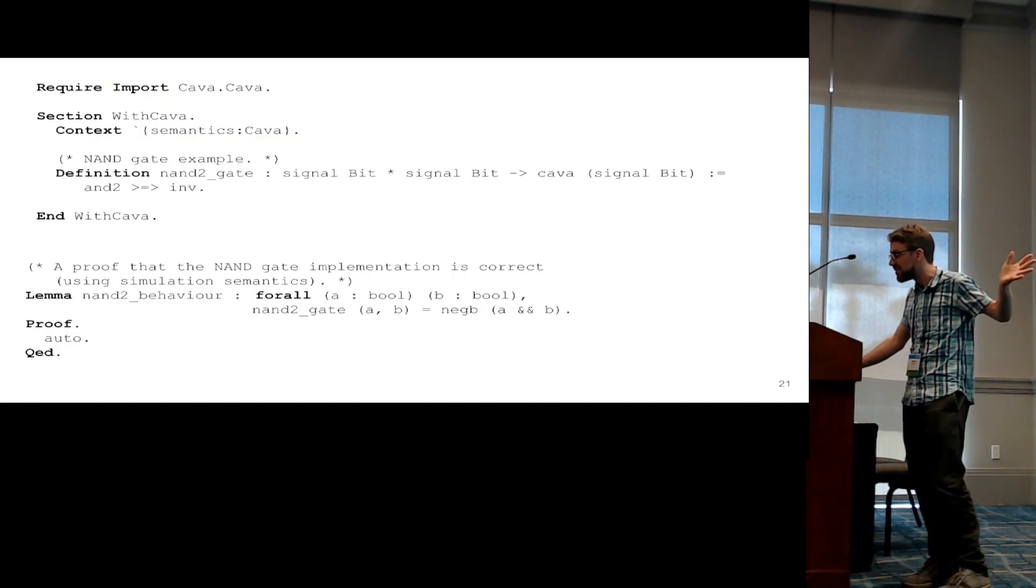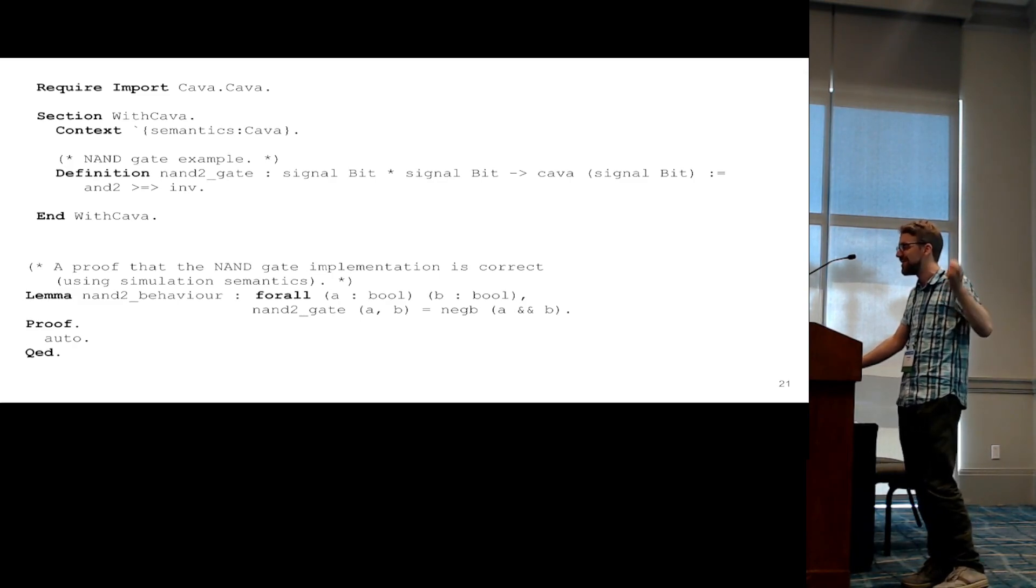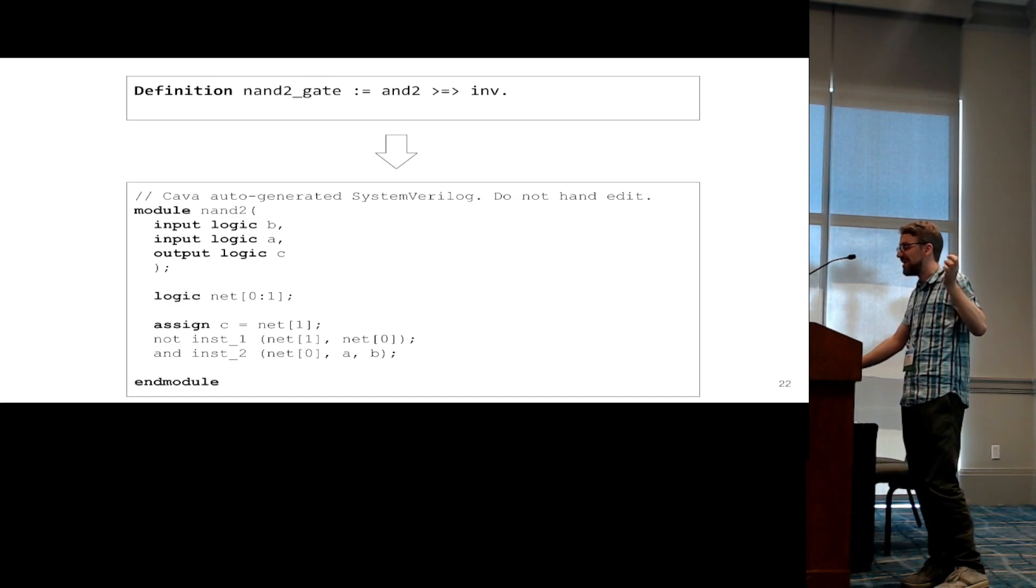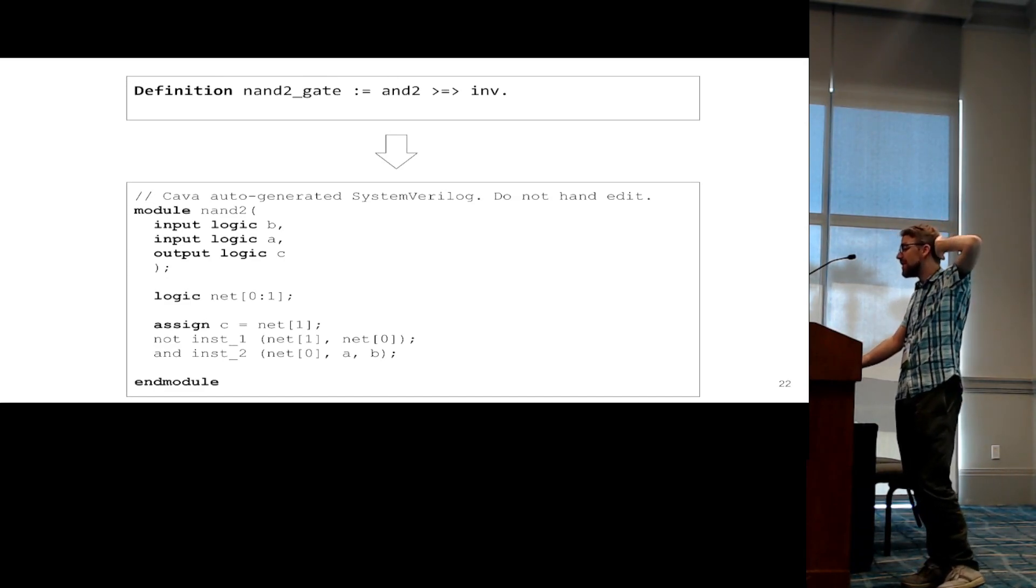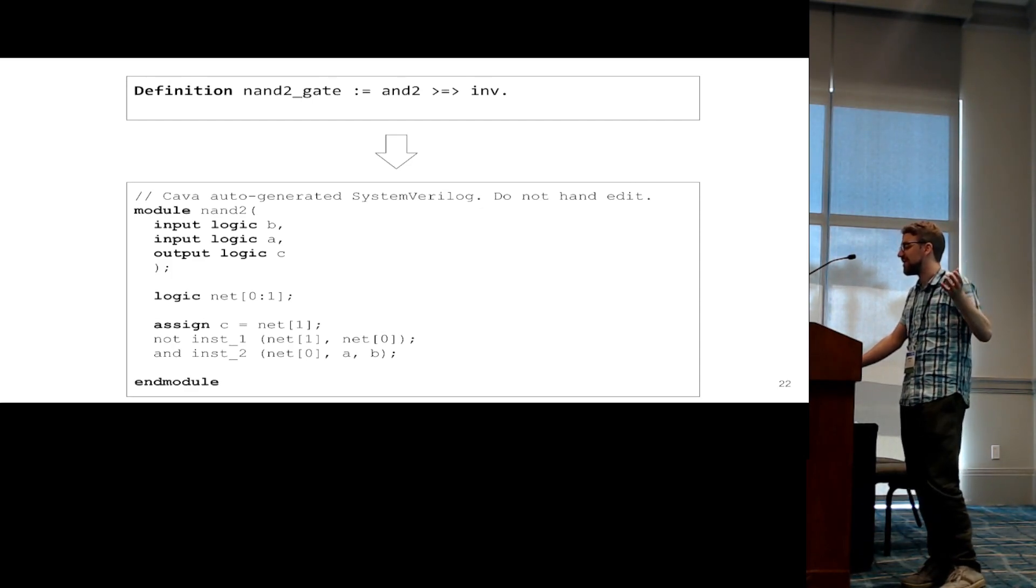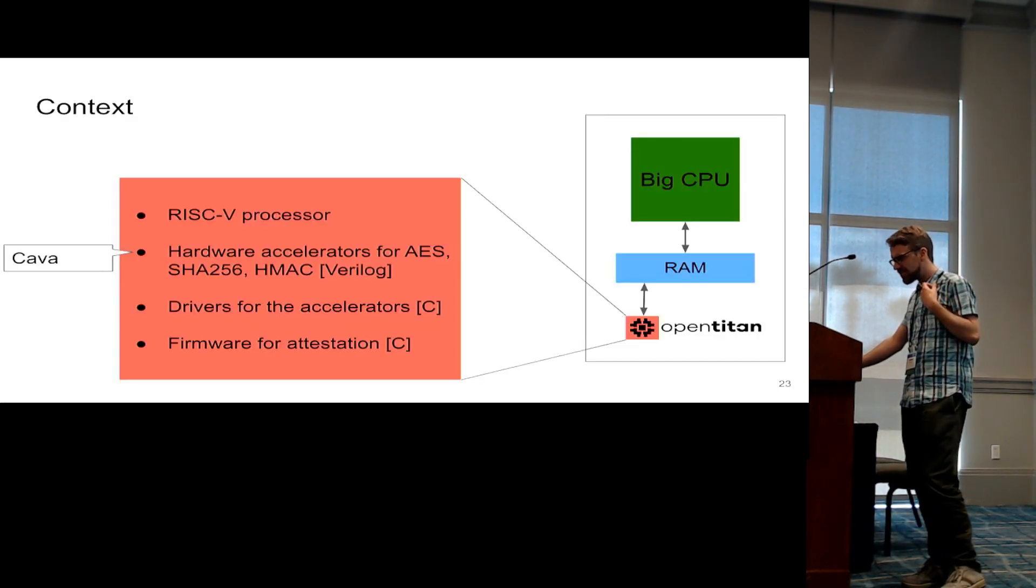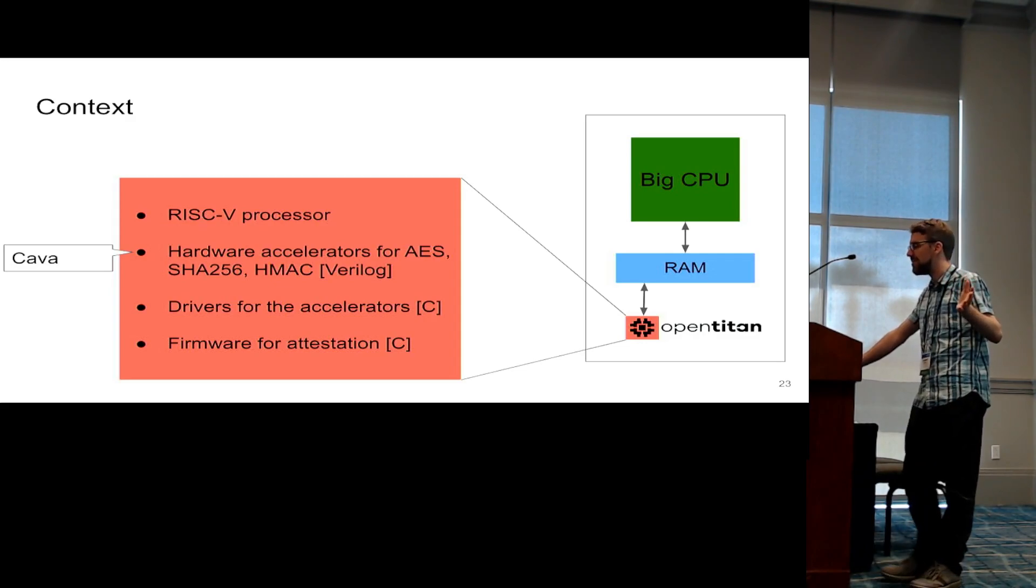And here we can see some Coq code, and as you can see, you can write proofs, and in this case, it's so simple that it's actually a very simple proof, but you can also write more complicated proofs. And then, given such a Coq circuit, you can also generate netlists from it directly using CAVA. So that's about as much as I wanted to say about CAVA.